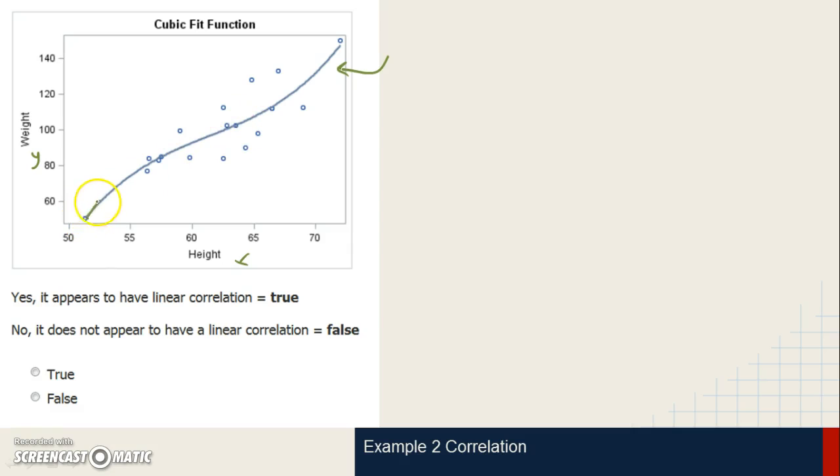Well, it kind of does, but if you think about it, it goes up, and then it starts to curve a little bit, and then it curves back up. So although it looks very close to a linear line, it's actually not. It's actually a cubic line. So if we're answering this question, does it appear to be linear? Well, no, it does not. So we know that it's false.